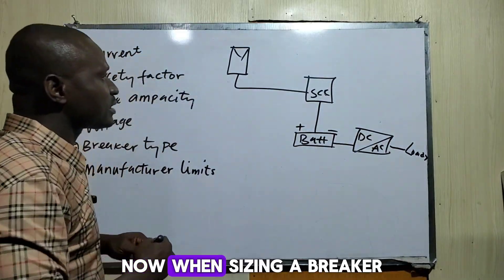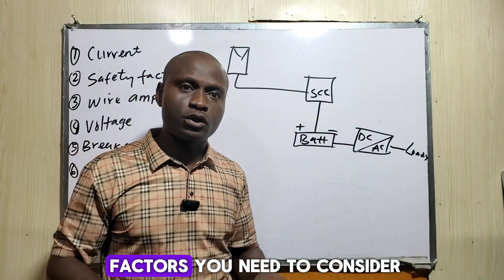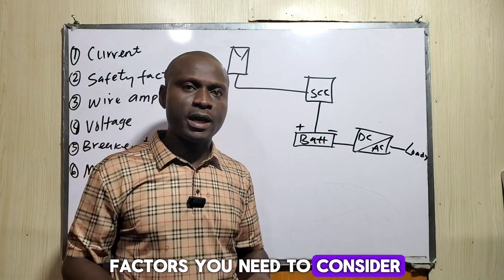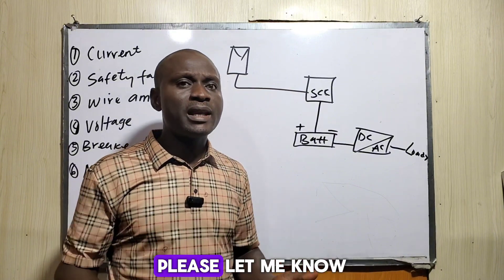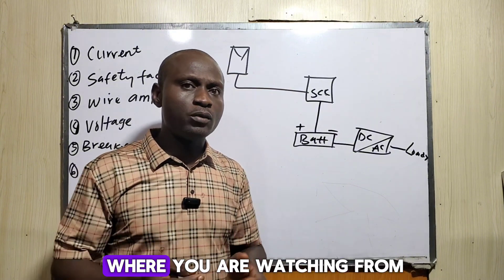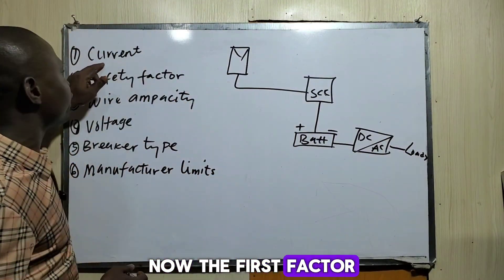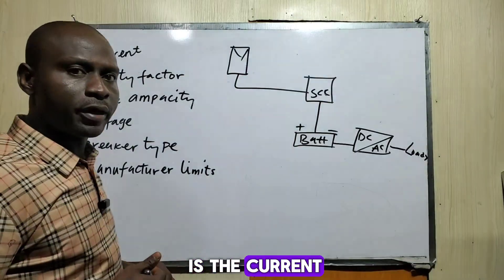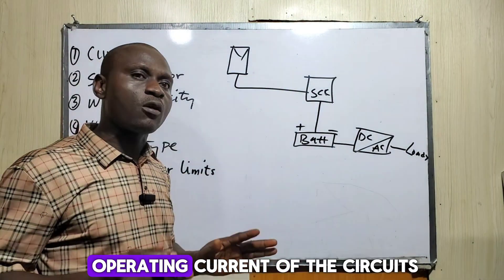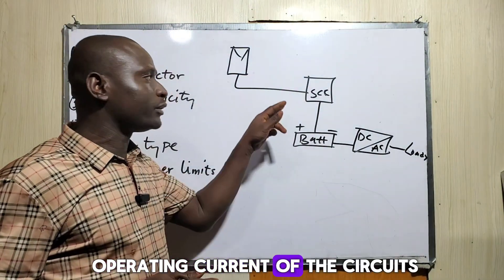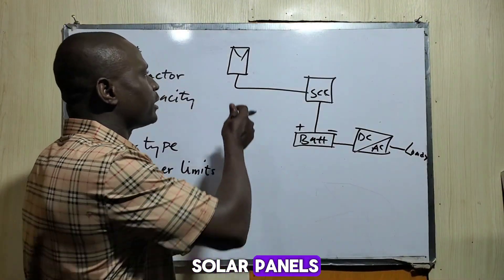When sizing a breaker, there are a few factors you need to take into consideration. The first factor is the current — the normal operating current of the circuits we have from the solar panels.